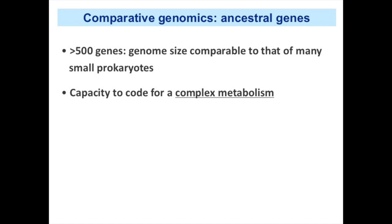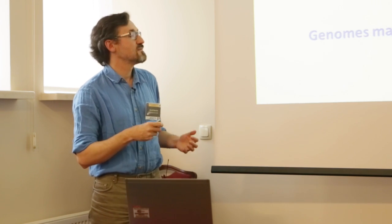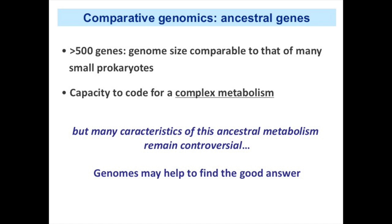If we come back to this list of genes, 500 genes is already a genome size comparable to that of many contemporary small prokaryotes, and it has the capacity to code for a relatively complex metabolism. However, even knowing this list of genes, many characteristics of this ancestral metabolism remain controversial.